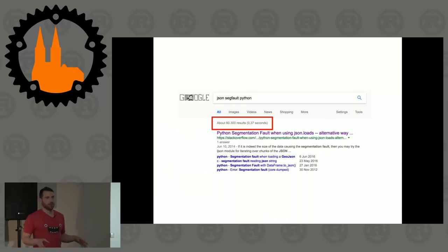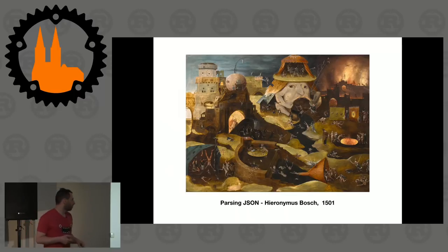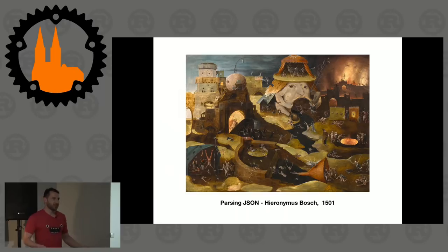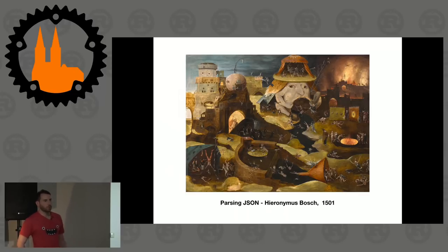Now that I know all of this, I look at JSON as more of a total abomination. Hieronymus Bosch made a famous painting — it's called 'Parsing JSON,' from 1501 — and it cannot be more real. So I said I need to fix this. Of course it's super easy to write a JSON encoder. There was a Python hackathon at Trivago not too long ago where I was super bored, and I said I'm gonna give it a shot.